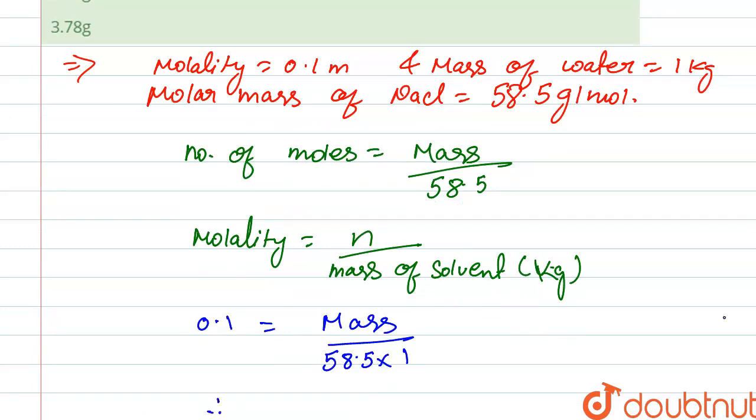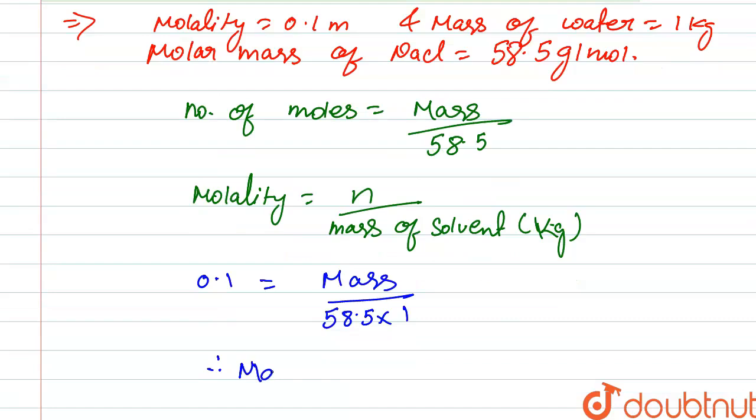From here we get the value of mass of NaCl, that is 5.85 grams.